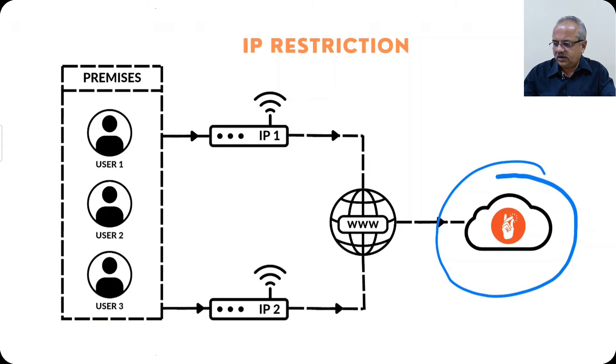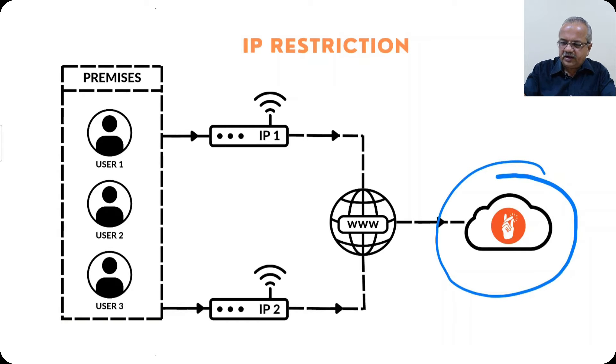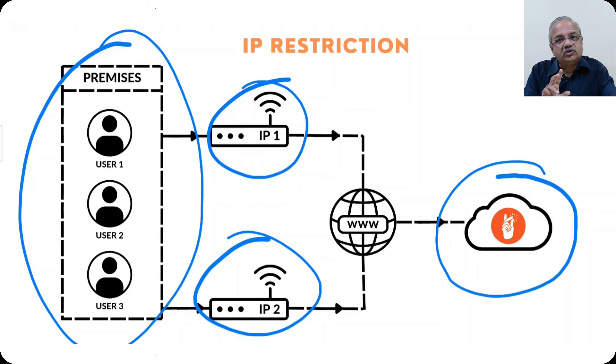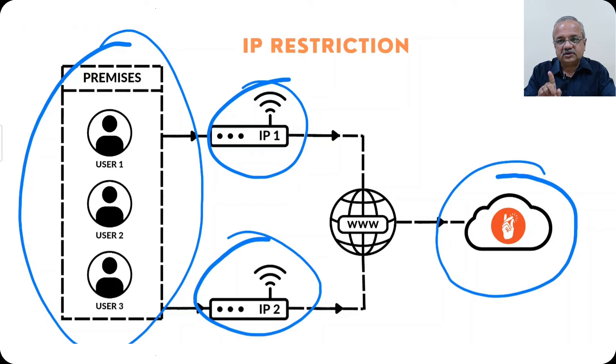Here you have your Tally on Cloud — your Tally or Busy application which is running on Sugam Cloud — and then you are connected in your office using these two routers, or you have got two internet connections in your office. You can configure Sugam Cloud so that only users accessing through these IP addresses will be allowed. That can be a very big benefit if you want to restrict people from outside trying to spoof in, trying to detect your password, or you don't want your users to access your ERP system after office hours or when they are not in office.